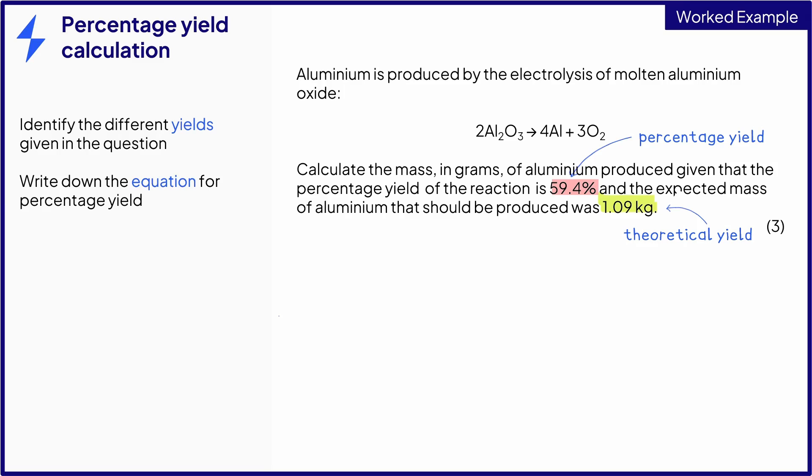Write down the equation for percentage yield. Now, substitute your values in. Remember, in this case, it is the percentage yield and the theoretical yield that you know, which gives us this equation.